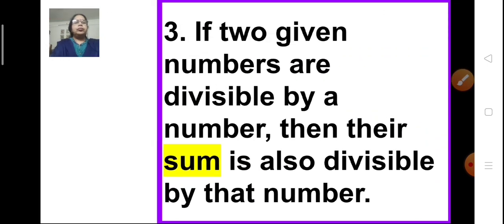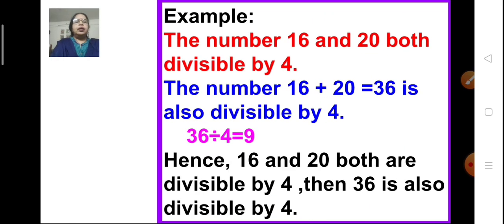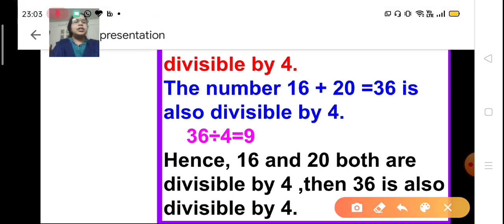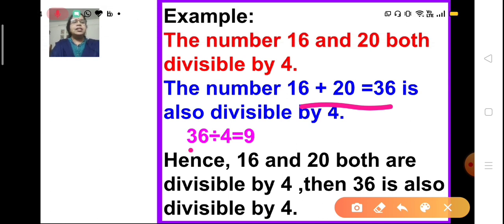Rule 3: If two given numbers are both divisible by a number, then their sum is also divisible by that number. For example, 16 and 20 are both divisible by 4. Their sum is 36, and 36 is also divisible by 4 — 4 times 9 is 36 — which proves the rule.